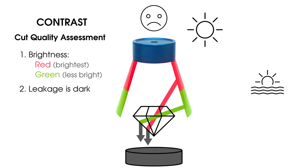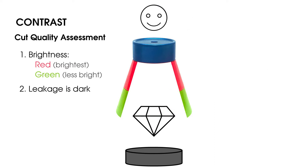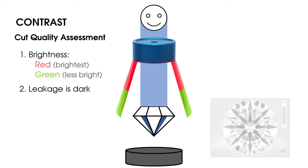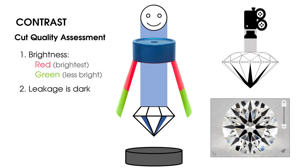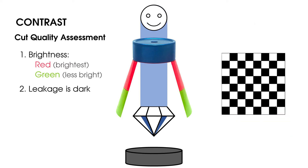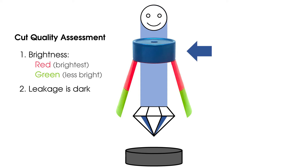That brings us to contrast. Some light from above will always be blocked by the viewer, creating a dark pattern. You can see the contrast effect in diamond photos because the camera blocks light the same way a viewer does. The on-and-off contrast effect when diamonds move is a dramatic component of scintillation. Asset places blue at the highest angles, so in Asset cut quality assessment, the contrast pattern is blue.